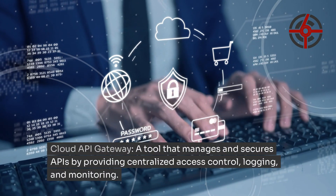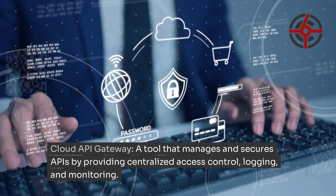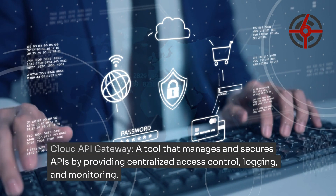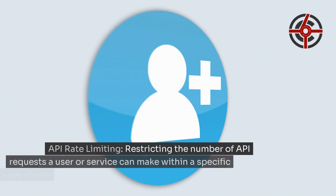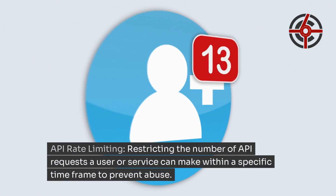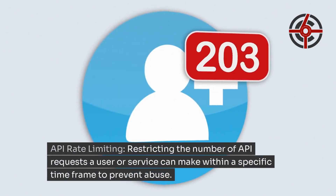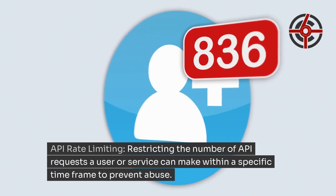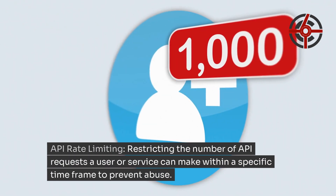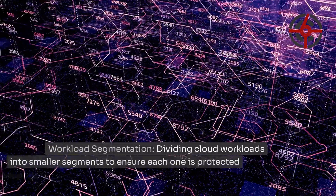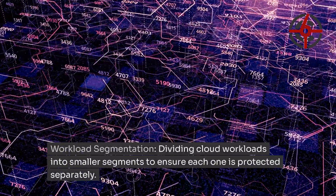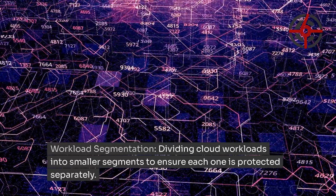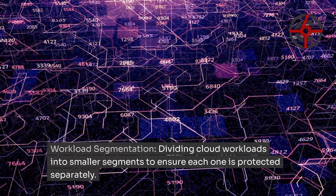Cloud API Gateway: a tool that manages and secures APIs by providing centralized access control, logging, and monitoring. API Rate Limiting: restricting the number of API requests a user or service can make within a specific time frame to prevent abuse. Workload Segmentation: dividing cloud workloads into smaller segments to ensure each one is protected separately.